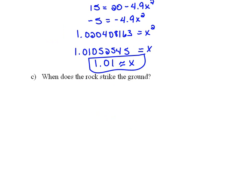Now for the last one, it says, when does the rock strike the ground? So again, we're asking for a time. And when the rock strikes the ground, we're going to be at a height of 0. So we would replace 0 for h in our function. And then we would have to solve for x.